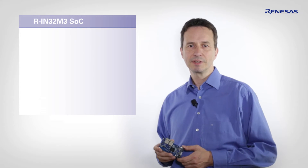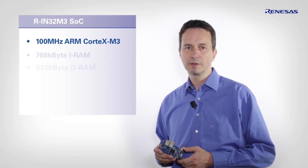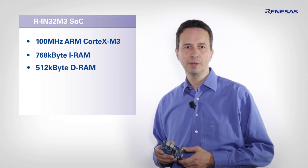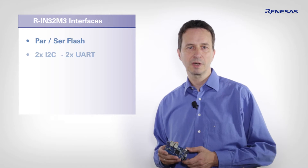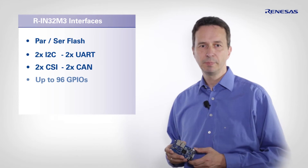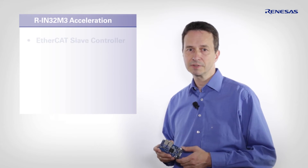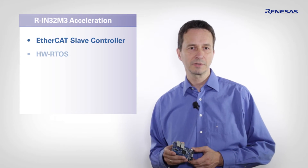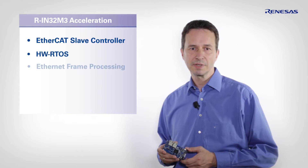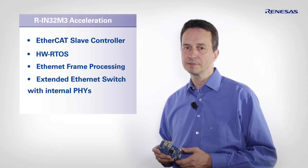The RIN device itself is an SoC with an ARM Cortex M3 CPU and lots of memory for the stack and application software. It provides a lot of interfaces like FLASH, I2C, UART, CSI, CAN, many GPIOs and an external host interface. Internally we find hardware acceleration features for EtherCAT, hardware RTOS, Ethernet frame processing and with an extended Ethernet switch and included PHYs.